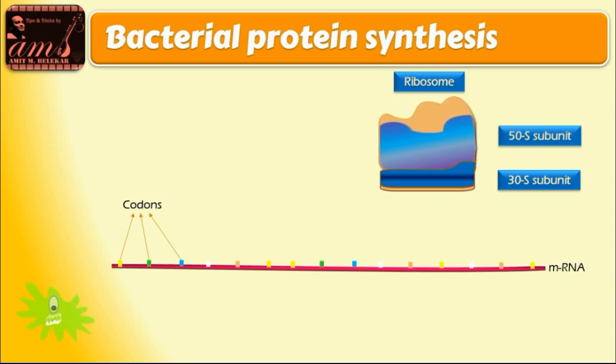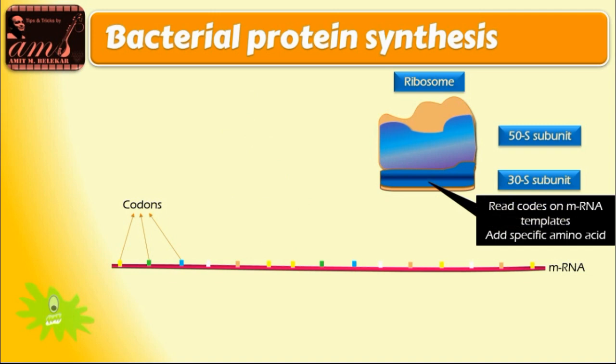30S subunit is responsible for reading codes on mRNA and adding specific amino acids in sequence. 30S subunit thus is responsible for initiation of the process or initial tRNA and ribosome complex formation.